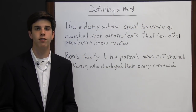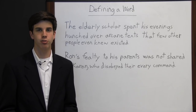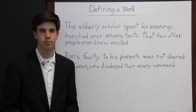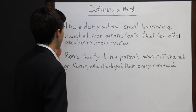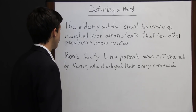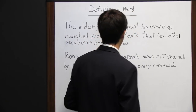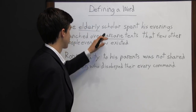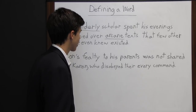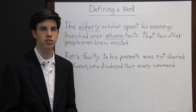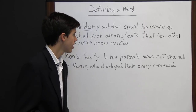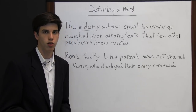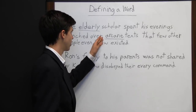Many times readers come across words they are unfamiliar with, so it's important that readers understand how to determine the definition of a word based on its context — looking at the words around it and how the word is used in the sentence. For example: 'The elderly scholar spent his evenings hunched over arcane text that few other people even knew existed.' The unfamiliar word is 'arcane,' but you can determine its definition from the words around it. If only an elderly scholar would study these texts, it must be a complex subject. And since 'few other people even knew existed,' it's something rare — so 'arcane' means rare or known only to a few.